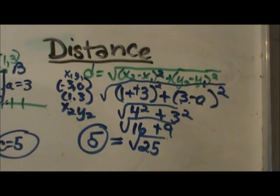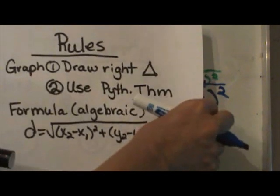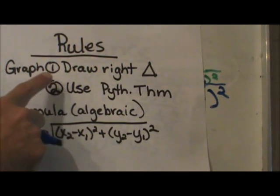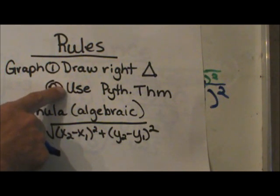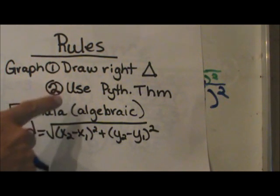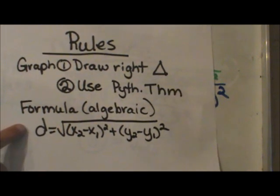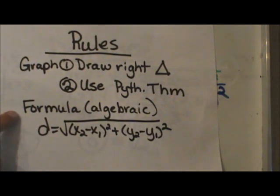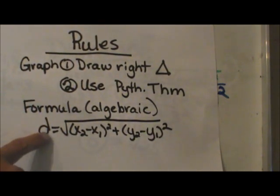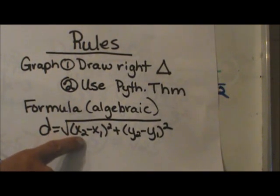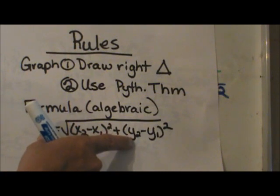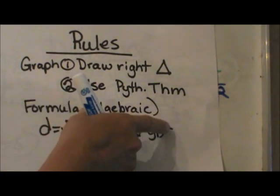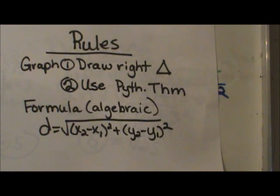So let's look at the rules very quickly. From a graphical approach draw your right triangle. Draw down and across to make the right triangle and then use the Pythagorean theorem by counting your units on your graph. To use the algebraic approach you have the formula which is the distance is equal to the square root of x2 minus x1 squared plus quantity y2 minus y1 squared. There you go. Good luck.